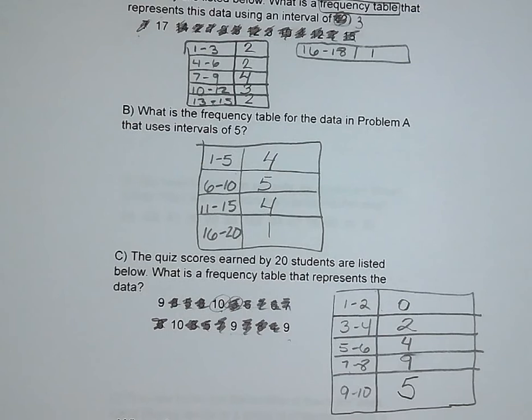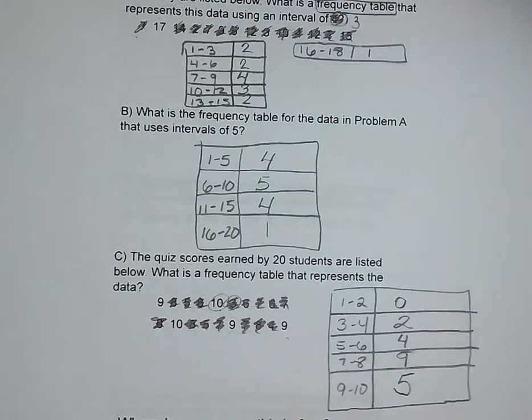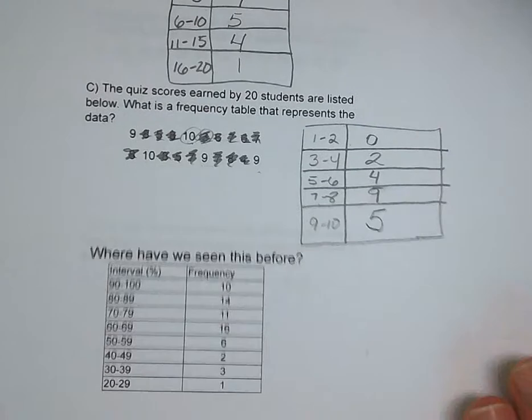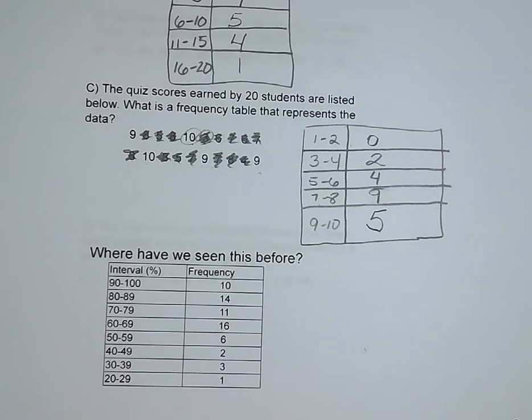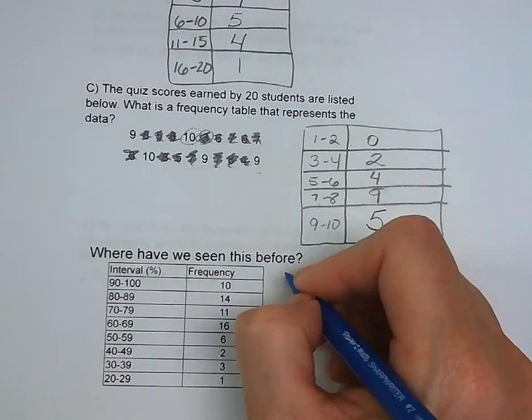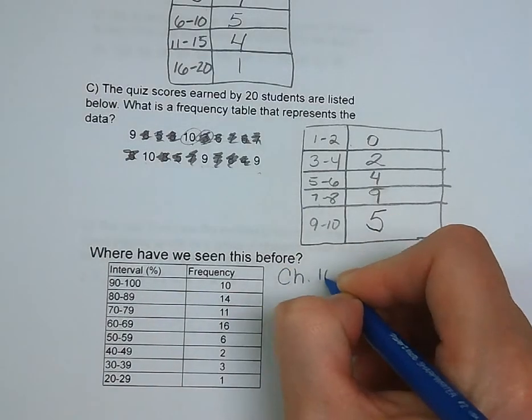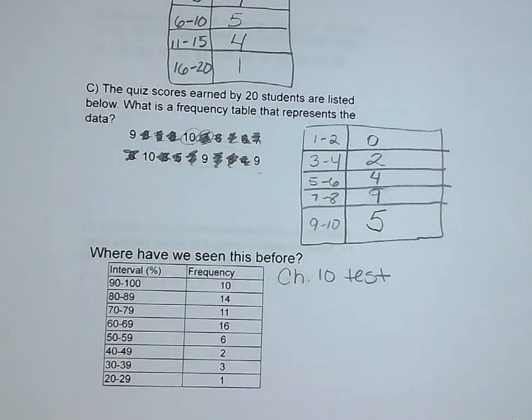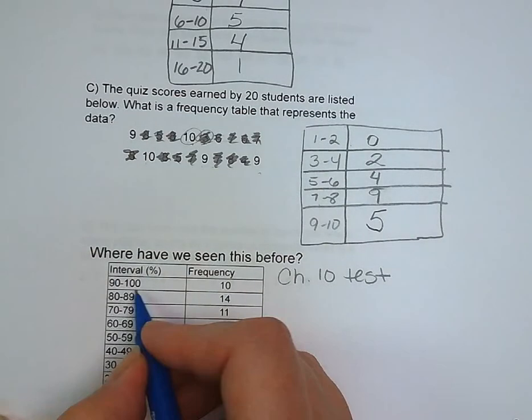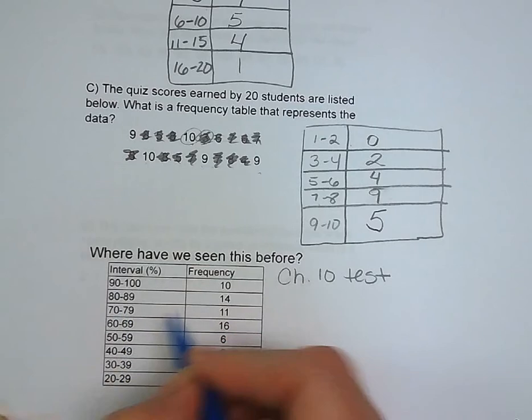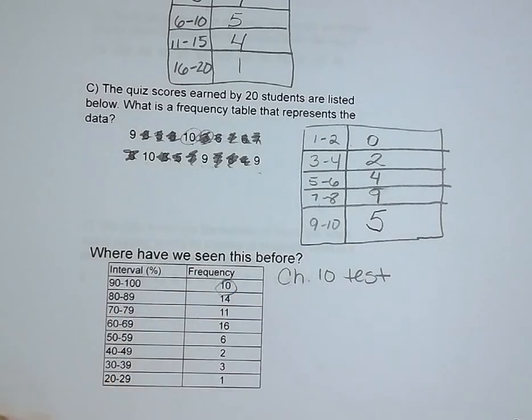Where have we seen examples of frequency tables being used before? What we show you after every test. This is our data from the Chapter 10 test for Ms. Zerzo's class and Mr. Boland's class combined. You can see the intervals. We went 10 percentage points for each interval, and we showed you how many students came up in each of those percentage bands.